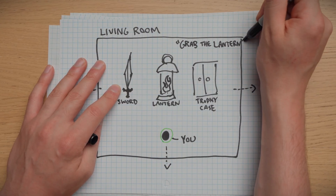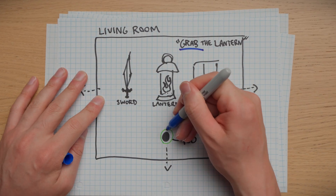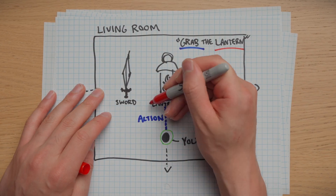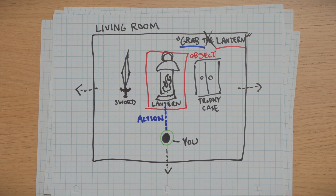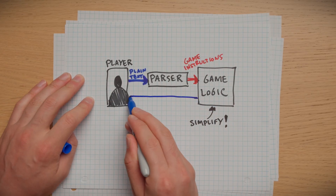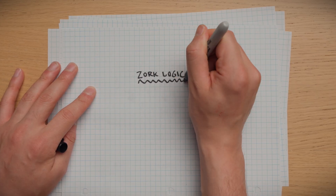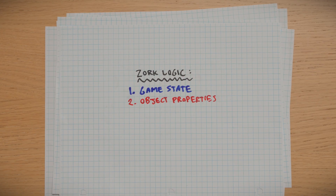It takes a plain English input, like 'grab the lantern,' and matches each word to its meaning. Grab is the verb, or action, and lantern is the noun, or object. 'The' is completely optional. So your parser understands what the player is saying — but that's only half the job done. It's not a one-sided relationship; the computer needs to say something back. Zork puts two concepts in play: game state and object properties.